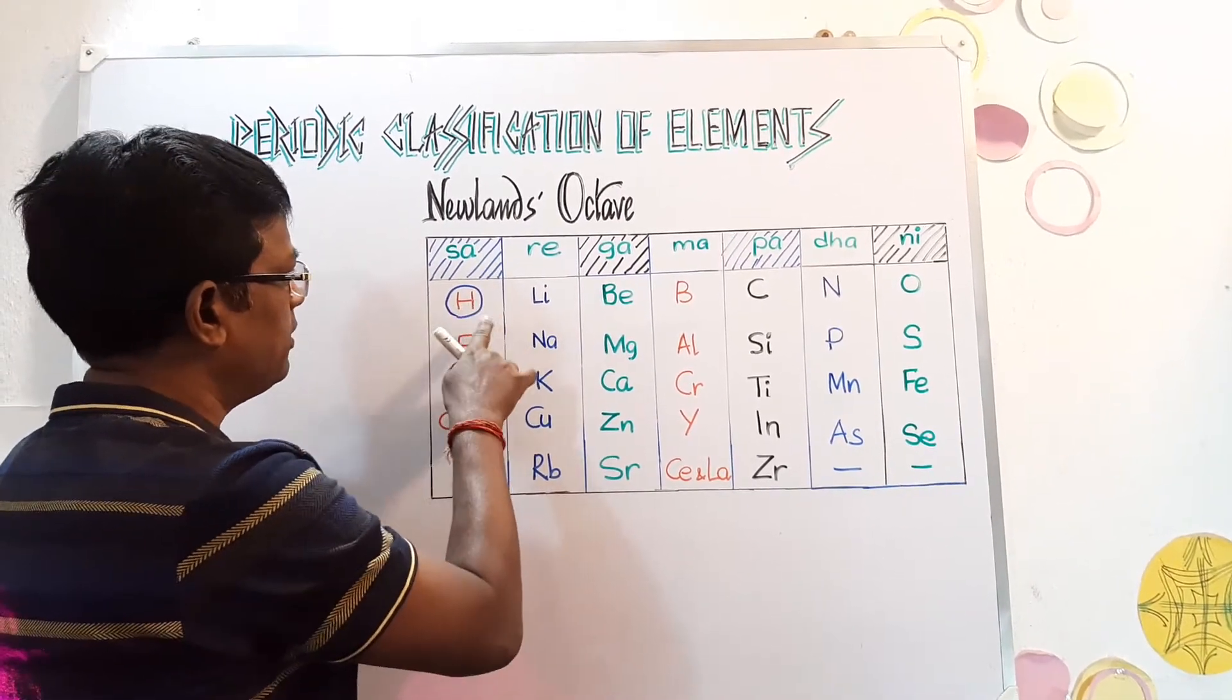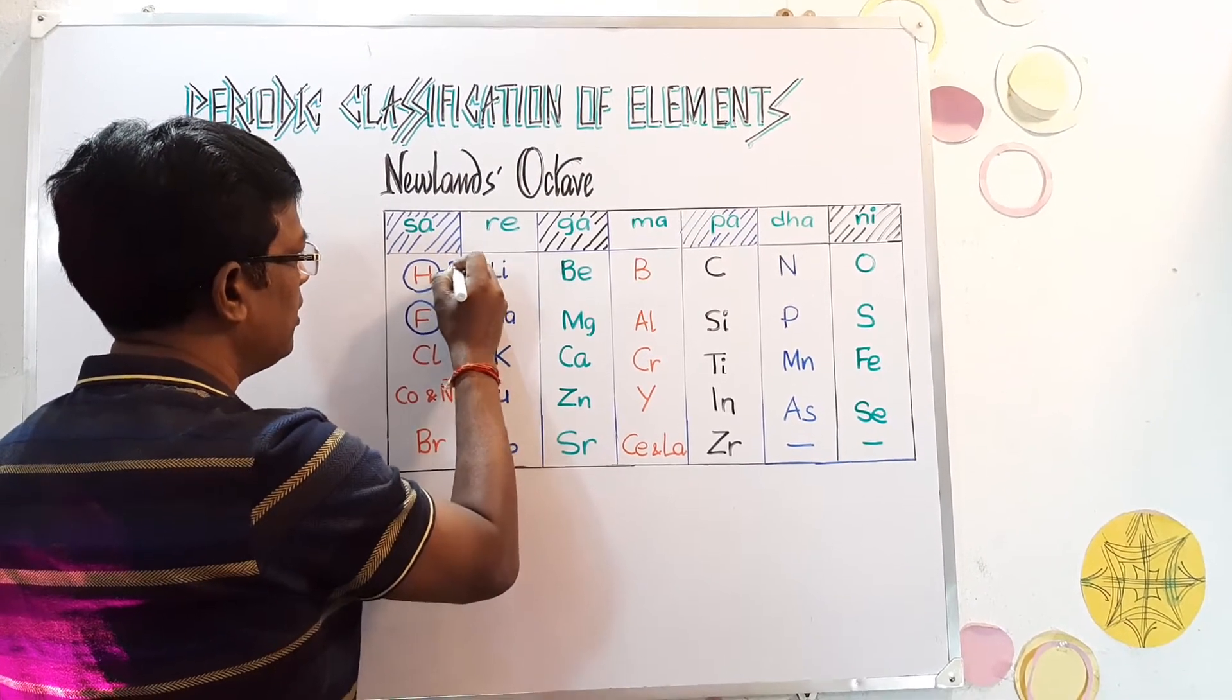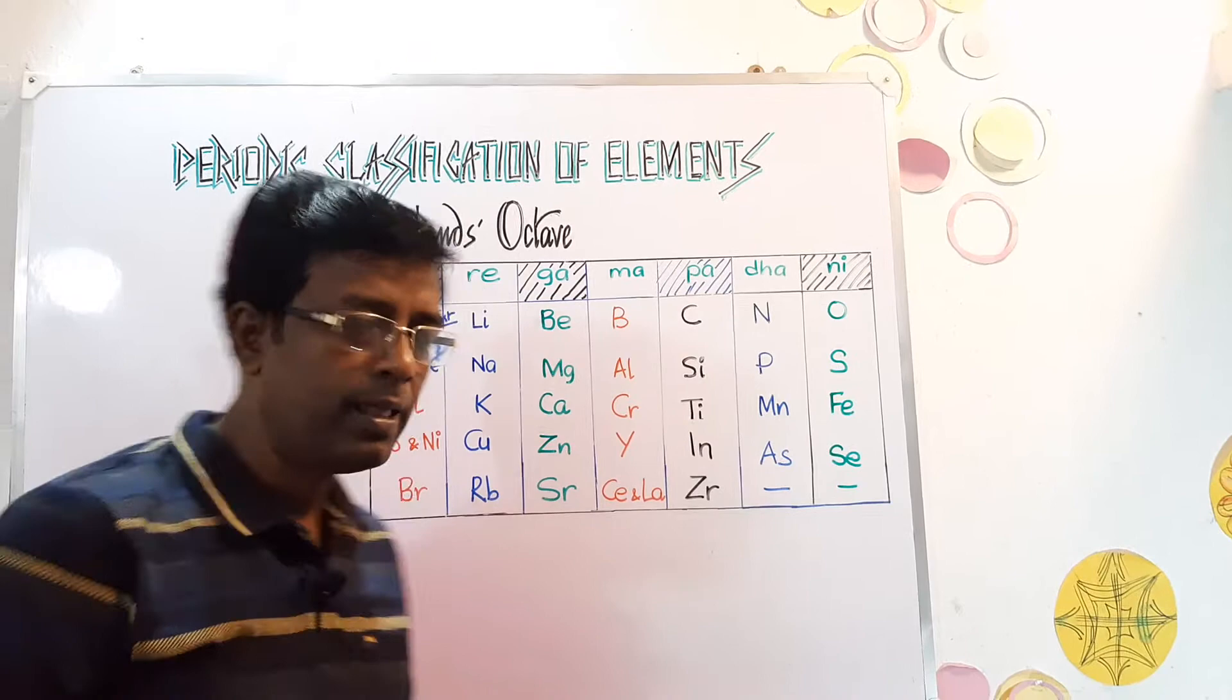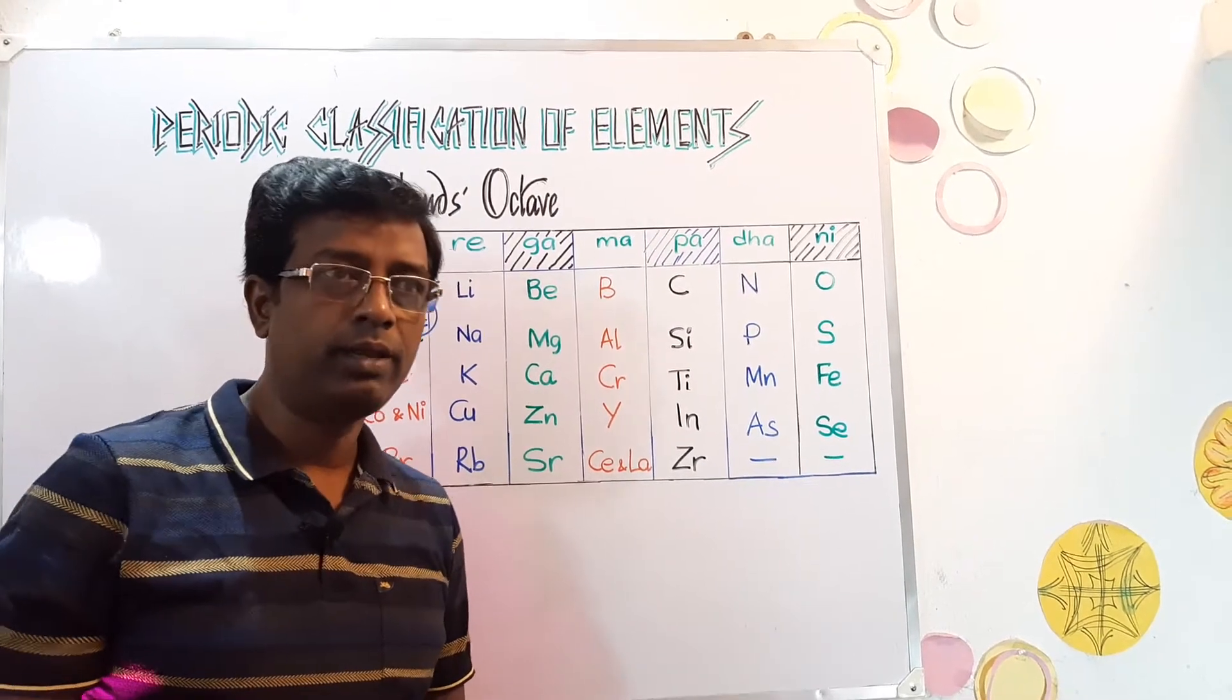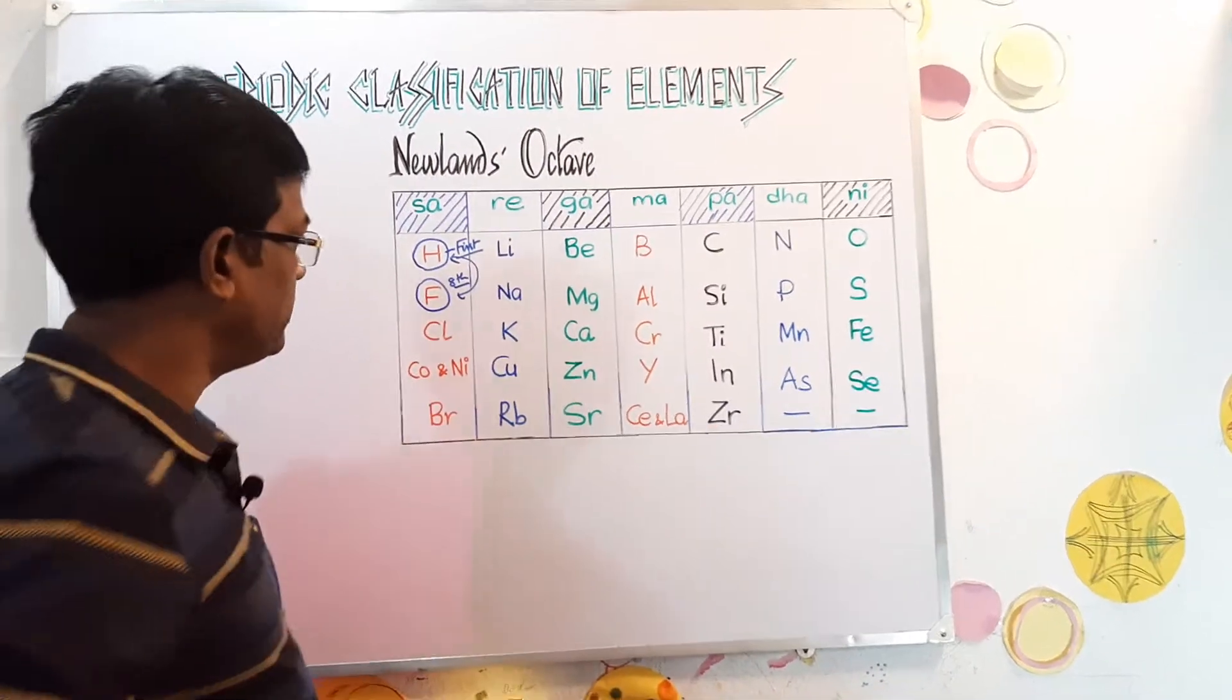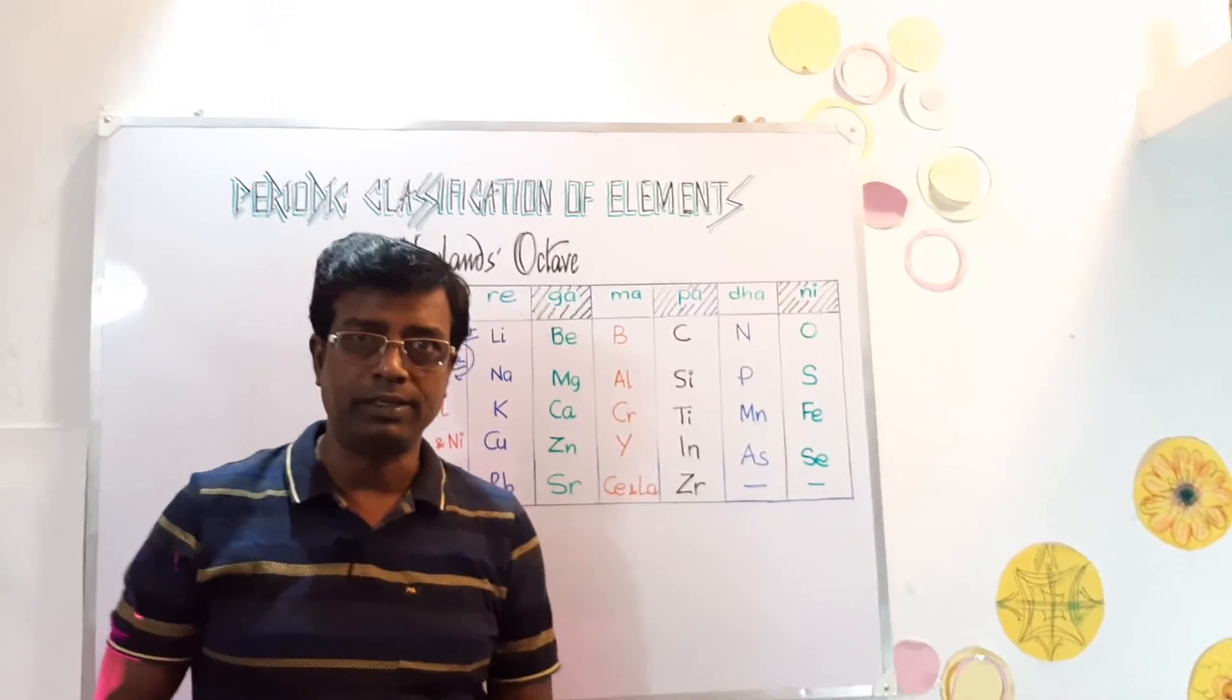Hydrogen is the first, 1, 2, 3, 4, 5, 6, 7 and this is the Fluorine is the 8th element. This is the first element and 8th element they fall in the same group. And Hydrogen and Fluorine has the same valency also we know now so they are chemically similar in some way. Now the first and the 8th element are similar like the musical notes.